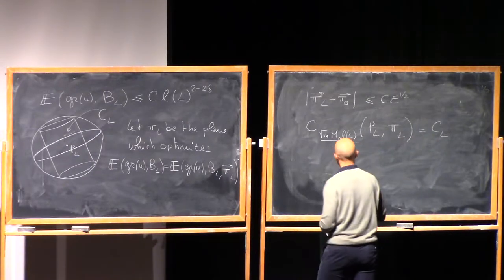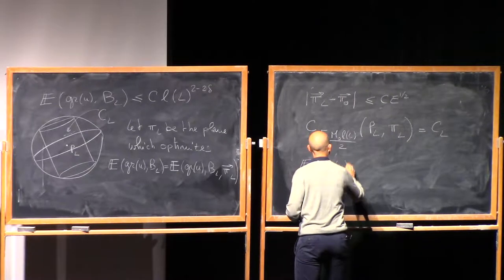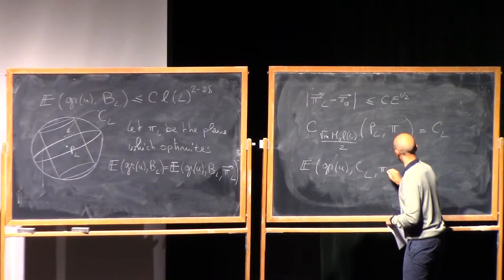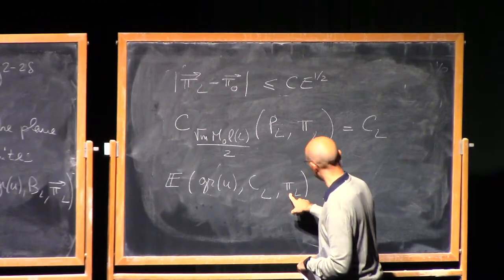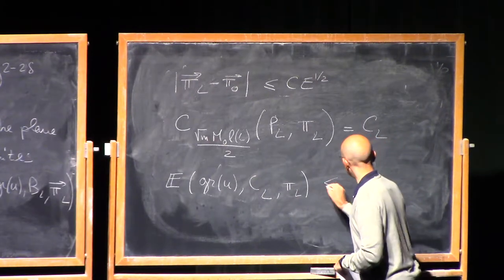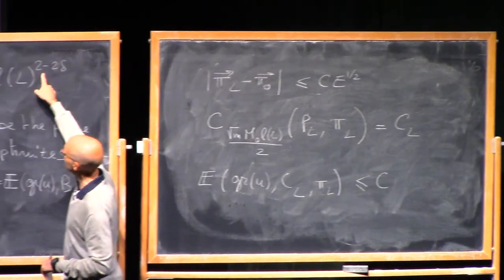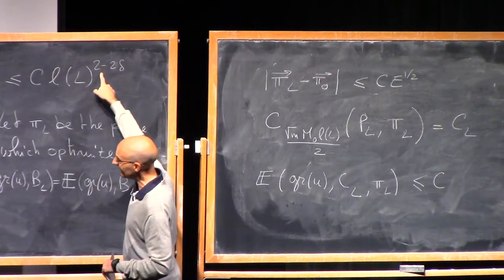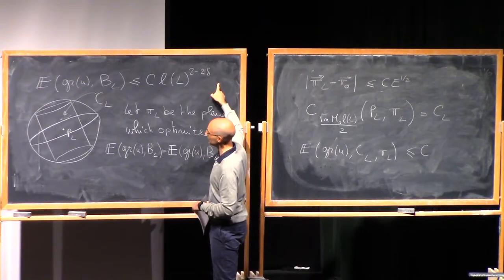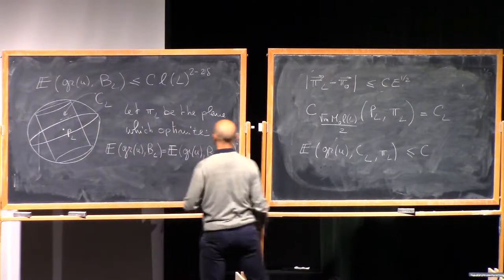Now conclude that the excess of the graph of U with respect to the cylinder, taking the plane parallel to the base of the cylinder as reference, is less or equal than a constant times L^{2−2δ}. But remember that the cylindrical excess is not normalized, so it gets an extra power of L — which is the power M, related to the size of the base of the cylinder.